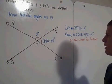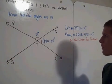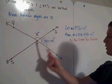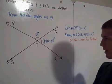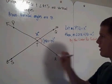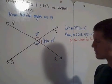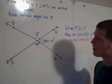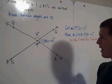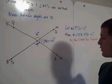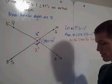Now we'll look at angle RTS. Angle QTR and angle RTS also make up a linear pair. These two angles also make up a linear pair, so the sum of their measurements must also be 180. Well, that means the measure of angle RTS must be x degrees.